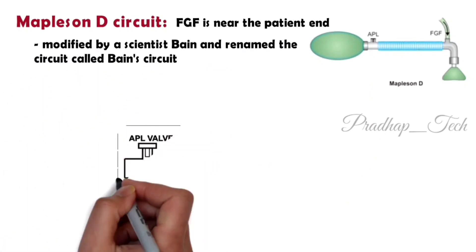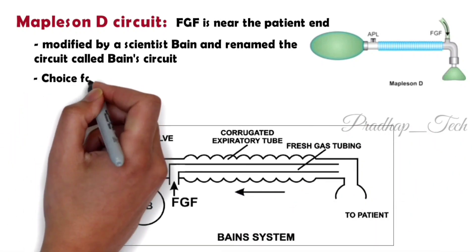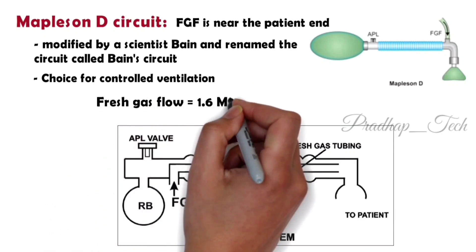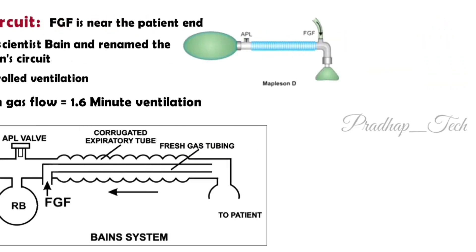In this circuit, he fitted an inner tube for delivering gas. This circuit is the choice for controlled ventilation. Here the fresh gas flow is kept 1.6 times the minute ventilation. This is all about the adult circuits.